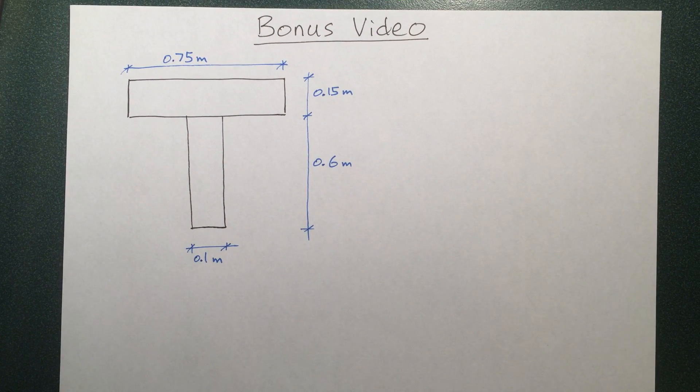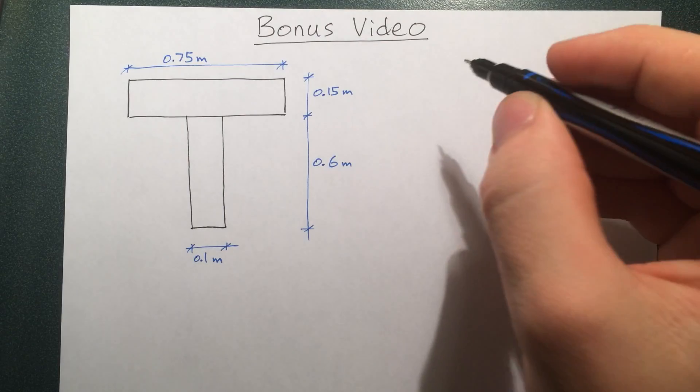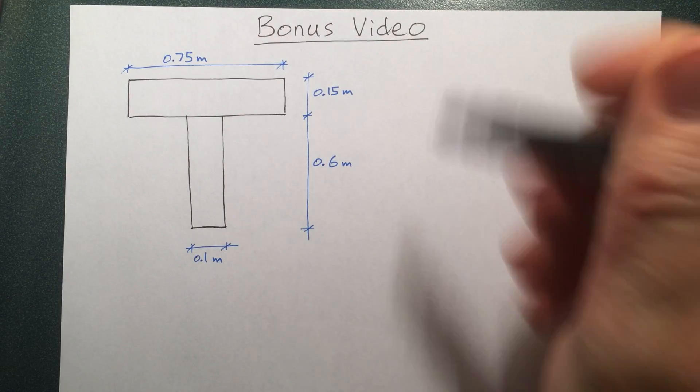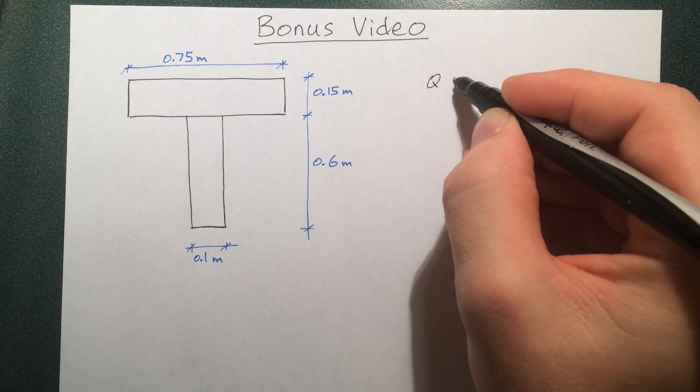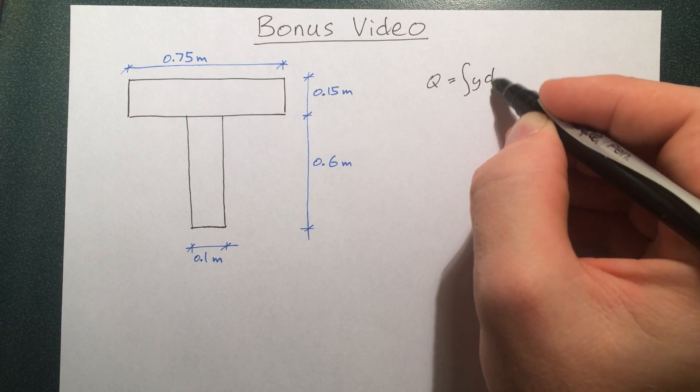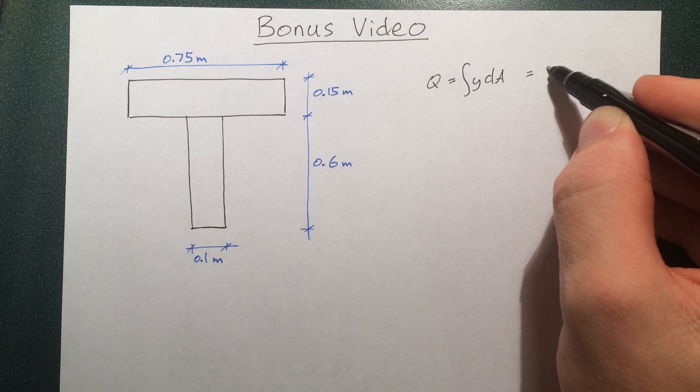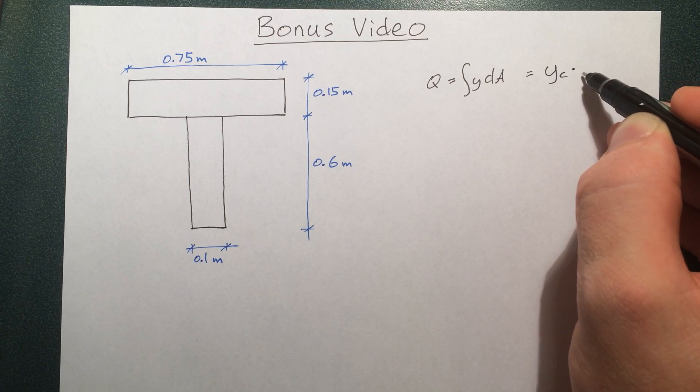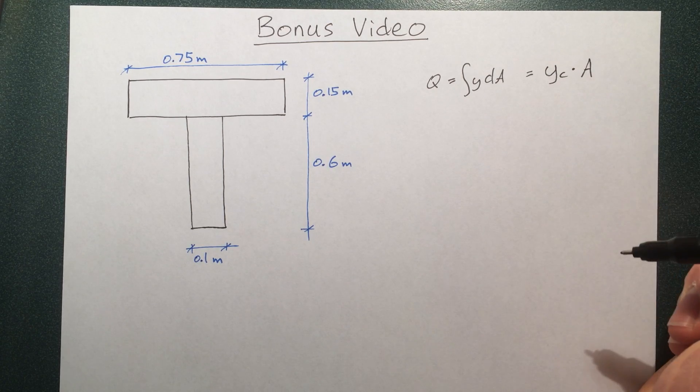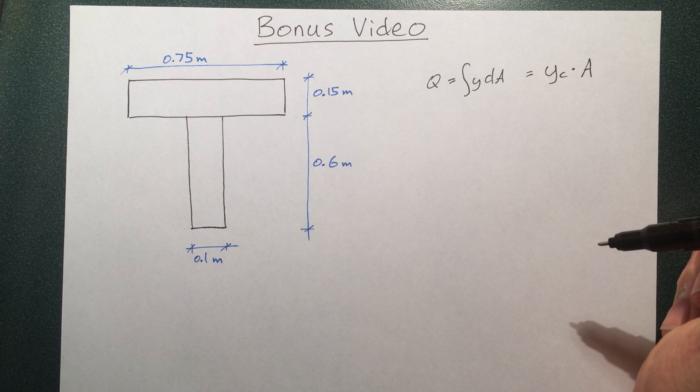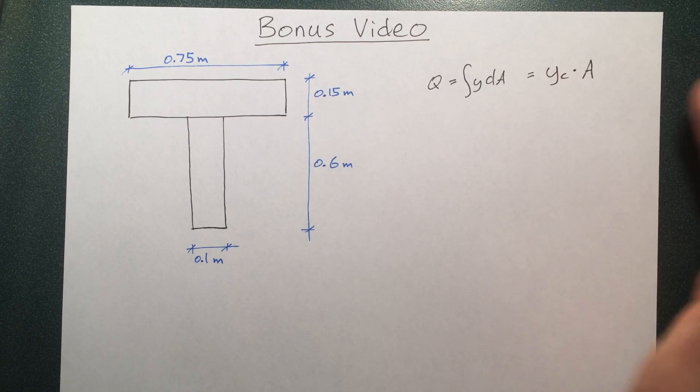So we know that Q, the first moment of area, is equal to the integral of y dA. You can work through this and also prove it equals y of the centroid of a piece times the area of that piece. That's what we're going to use the most in this video.